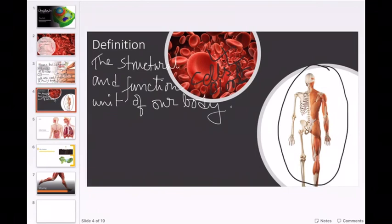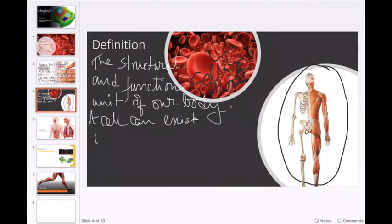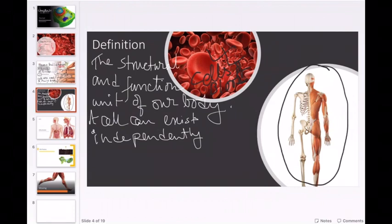It is the structural and functional unit of the body. If you have got one mark, write till here. If you have got two marks or more, then add a few more points. A cell can exist independently. As I said, life starts with a single cell — we started as a single cell, and it did not require any other cells. So a cell can exist independently, on its own.